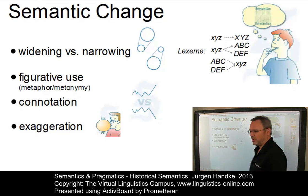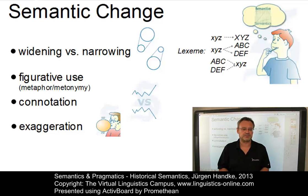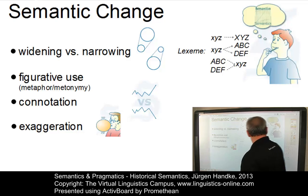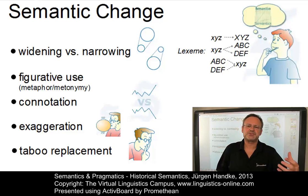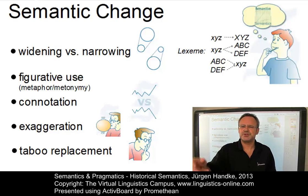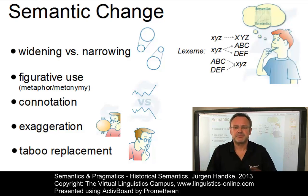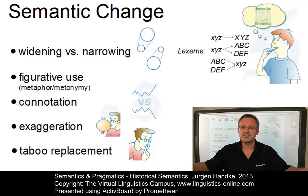Speakers may deliberately exaggerate their claims for emotional effect, or choose to mitigate their force through understatement. Both strategies may affect the meanings of words over time. The last example I would like to give is taboo replacement. There are some subjects that speakers avoid discussing with complete frankness in some or all forms of speech. In English such taboo subjects include sex, reproduction, death, excretion and the human body. Since taboos prohibit the use of plain language, speakers must find a way around them and thus create new meanings.